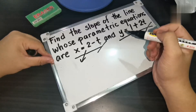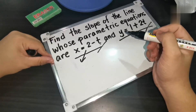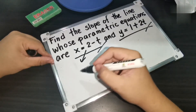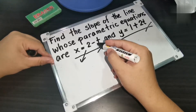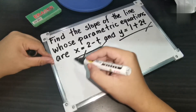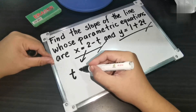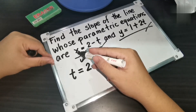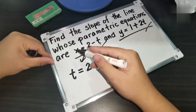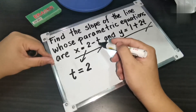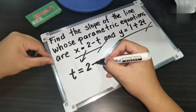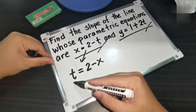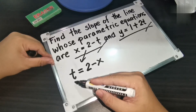So what will be your t in terms of x? We rewrite the first equation: if we transfer the negative t to the other side it becomes positive t, and if we transfer positive x to the other side it becomes negative x. So from your first equation, t is equal to 2 minus x.